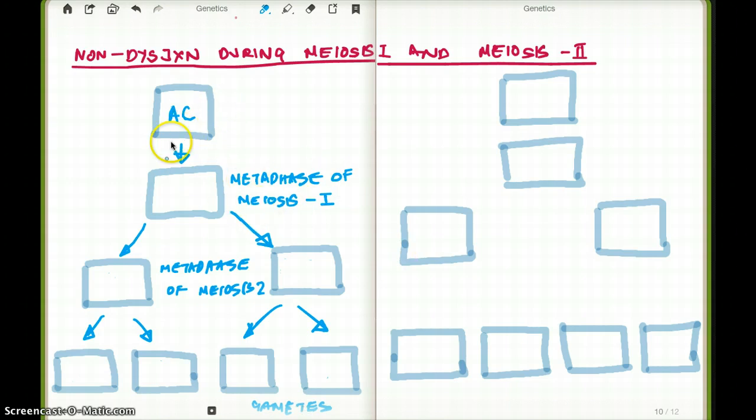So during metaphase of meiosis I, the A and the C is going to get doubled. So we're going to get A, A and C, C. So this is what happened during meiosis I. During metaphase of meiosis II, we are going to see A, A here and C, C here because they're kind of joined together.